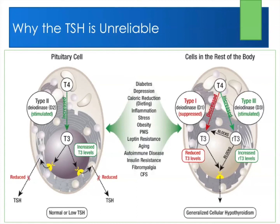Here's a pituitary cell versus a peripheral body cell. T4 goes into the peripheral cell and converts to T3 via type 1 deidinase. All these conditions suppress the formation and activity of type 1 deidinase, so less T4-to-T3 conversion occurs. At the same time, they stimulate and upregulate type 2 deidinase, so you get increased T4-to-T3 conversion inside the pituitary.